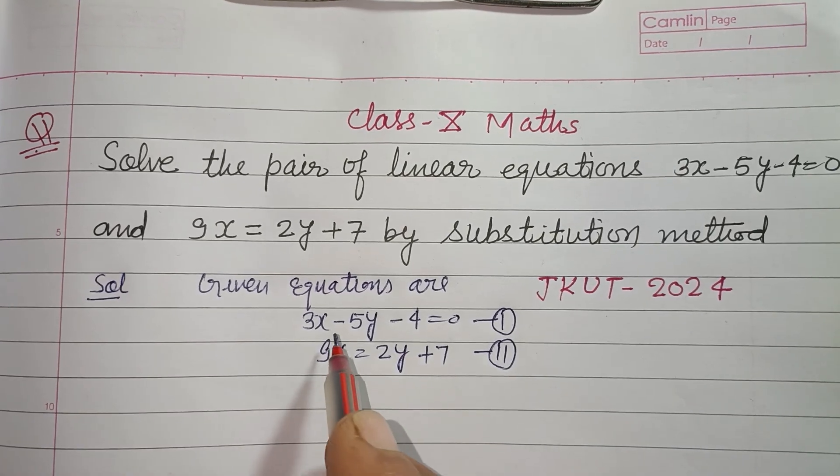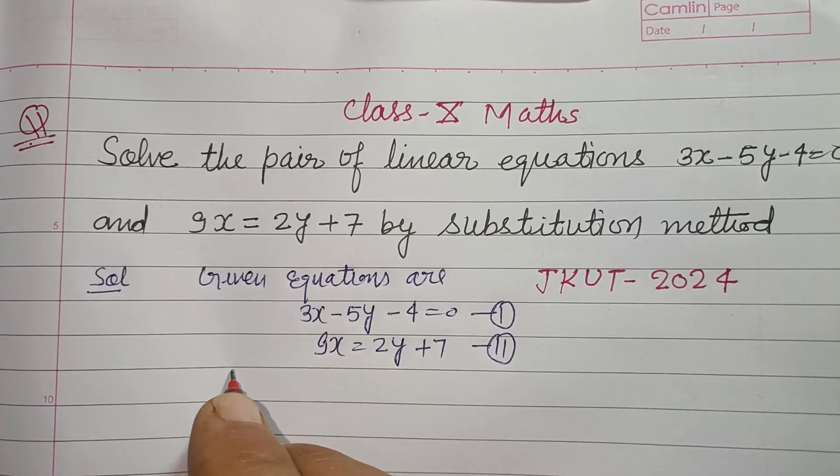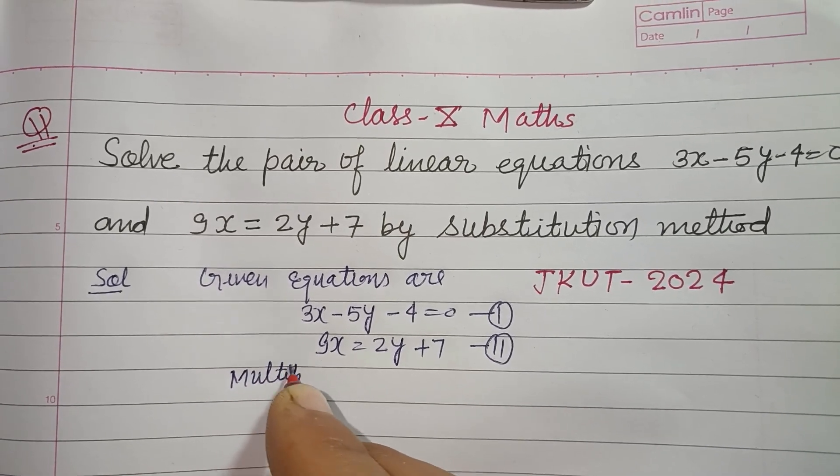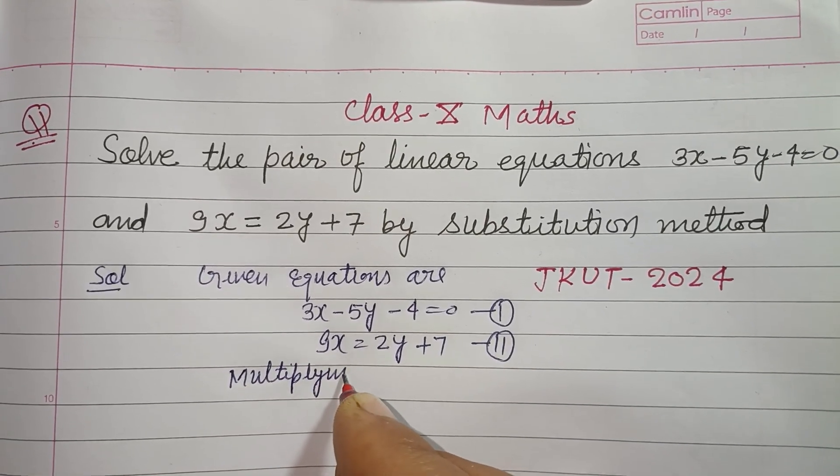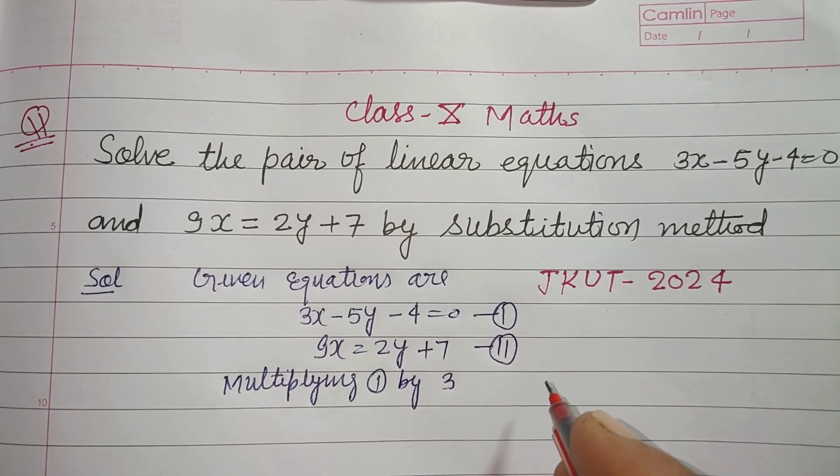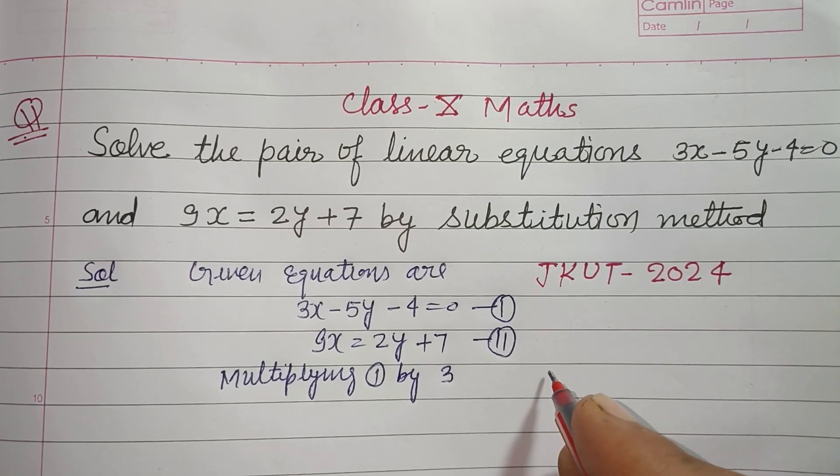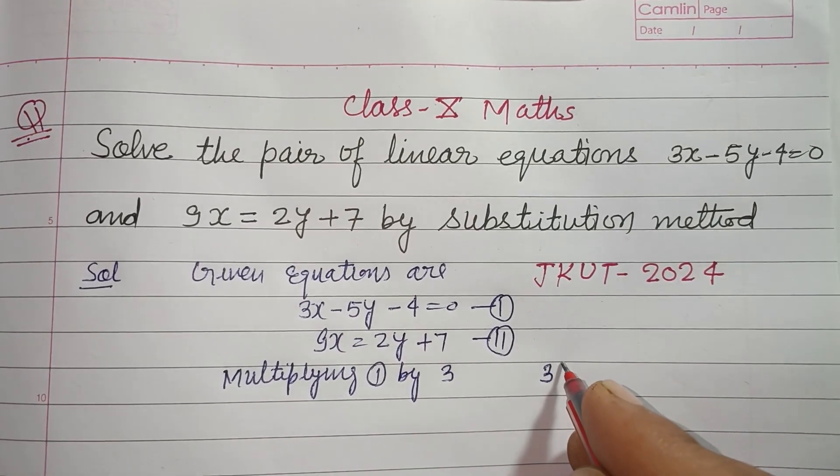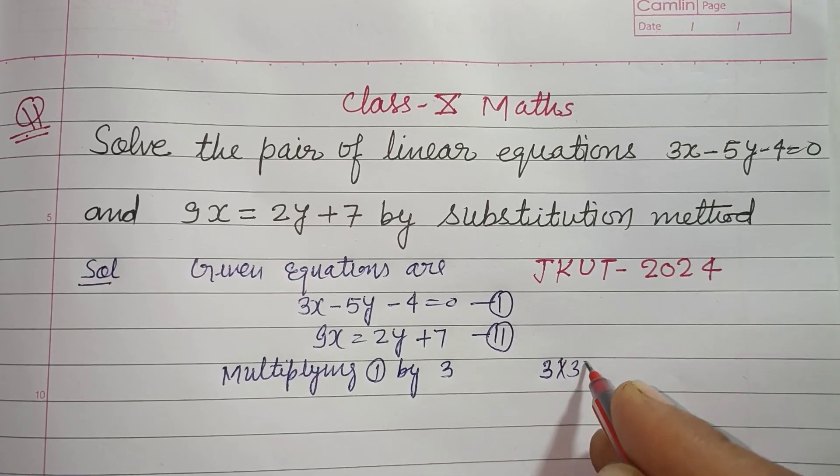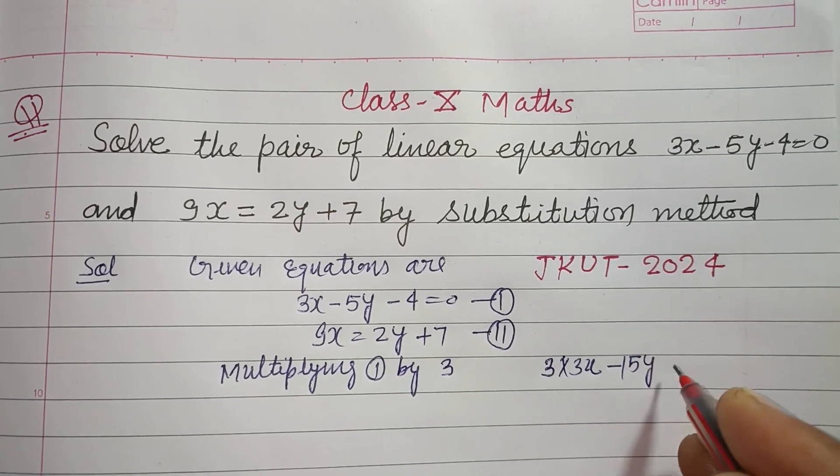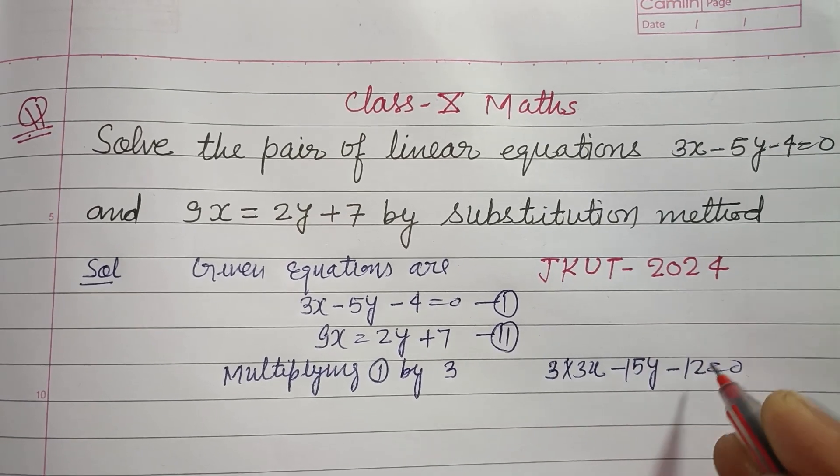So multiplying first by 3, we get 9x minus 15y minus 12 equal to 0.